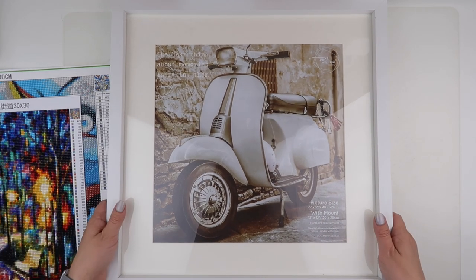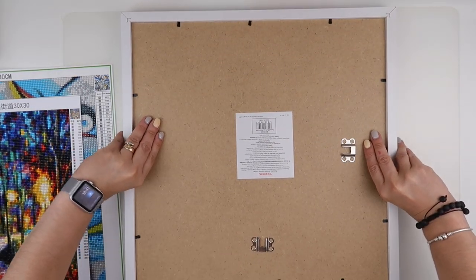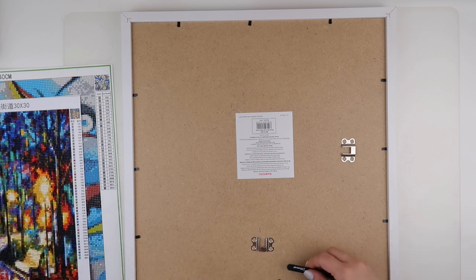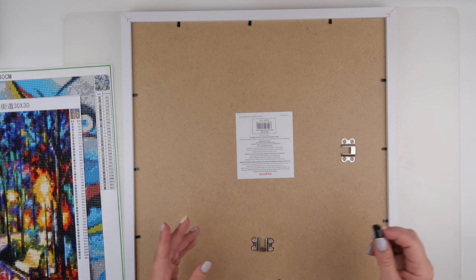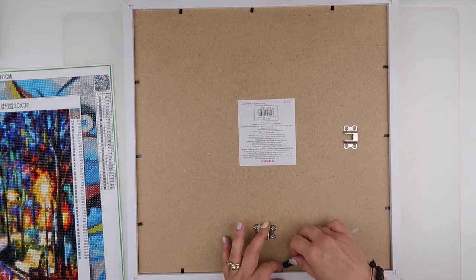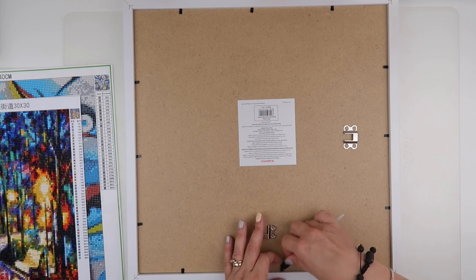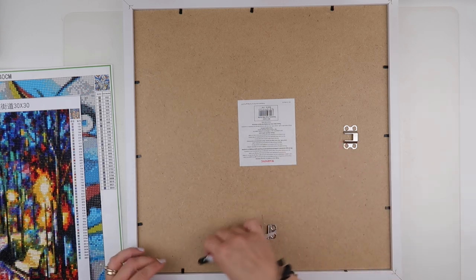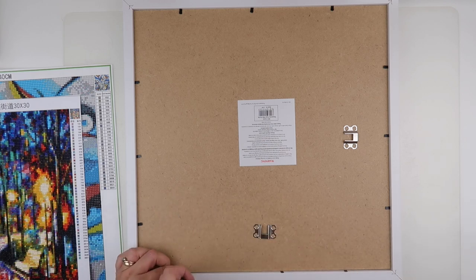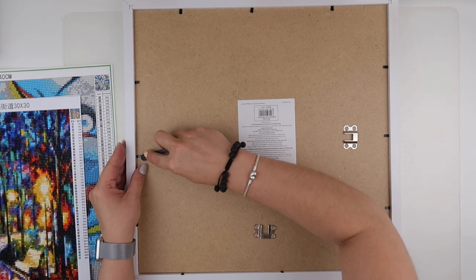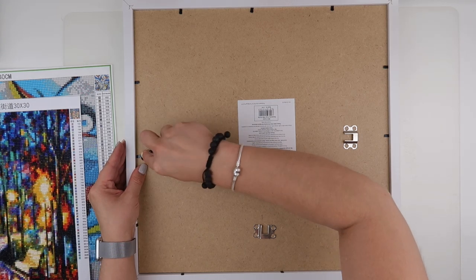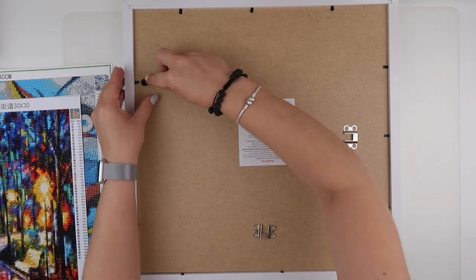To turn it over, we have these little black knobbly things which normally kill your nails when you're getting them undone. But if you can get them to raise up a little bit, these Evermoment tweezers, which are fantastic, I use them to flip up these bits of the frames all the time, so much easier on your fingers.